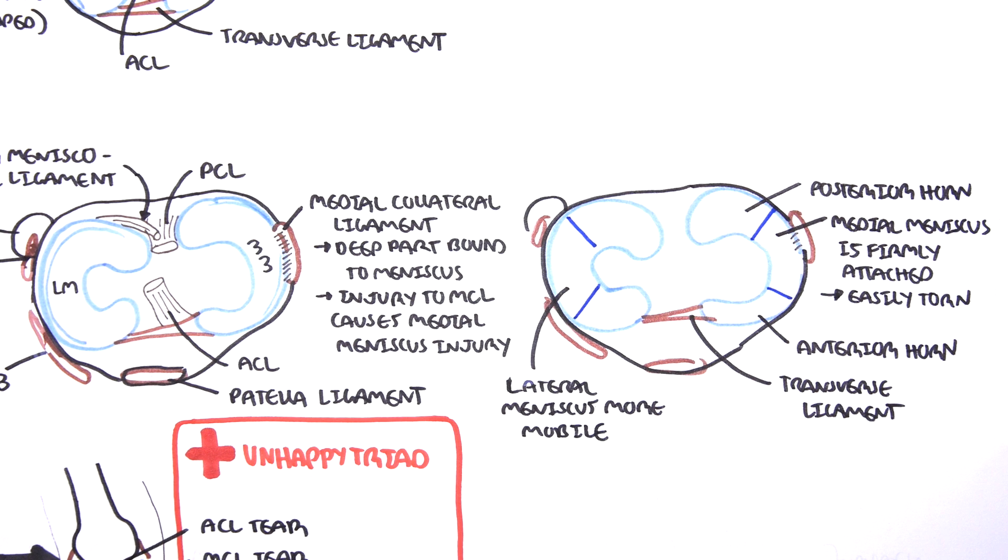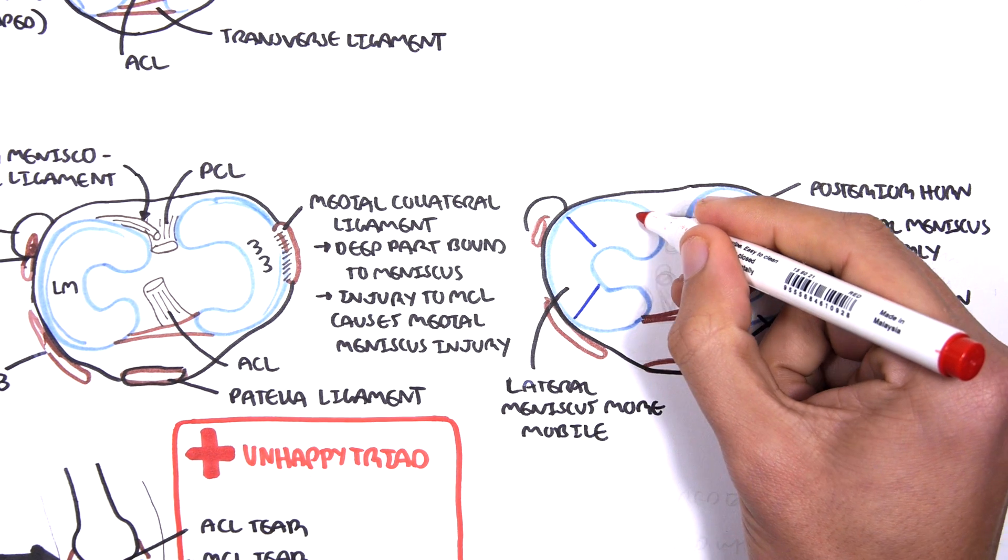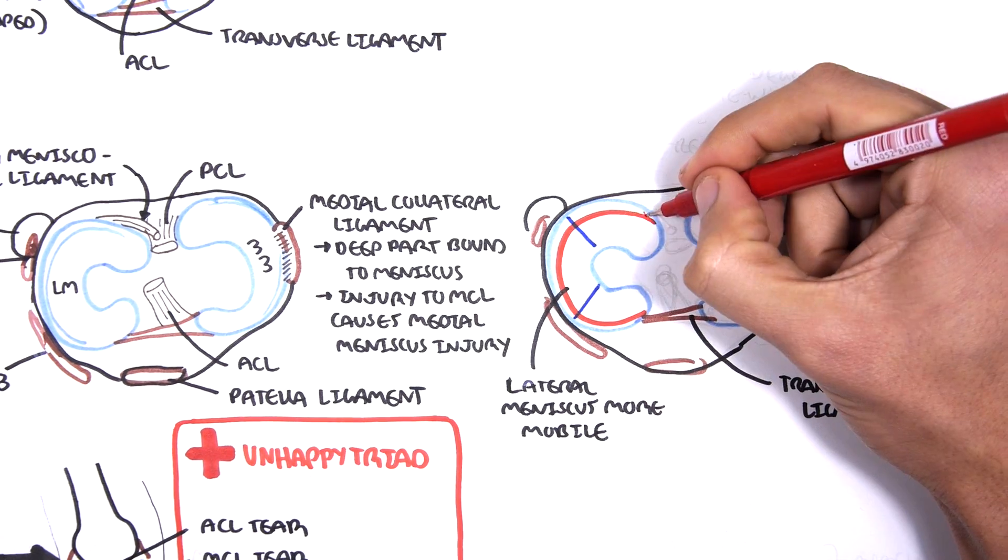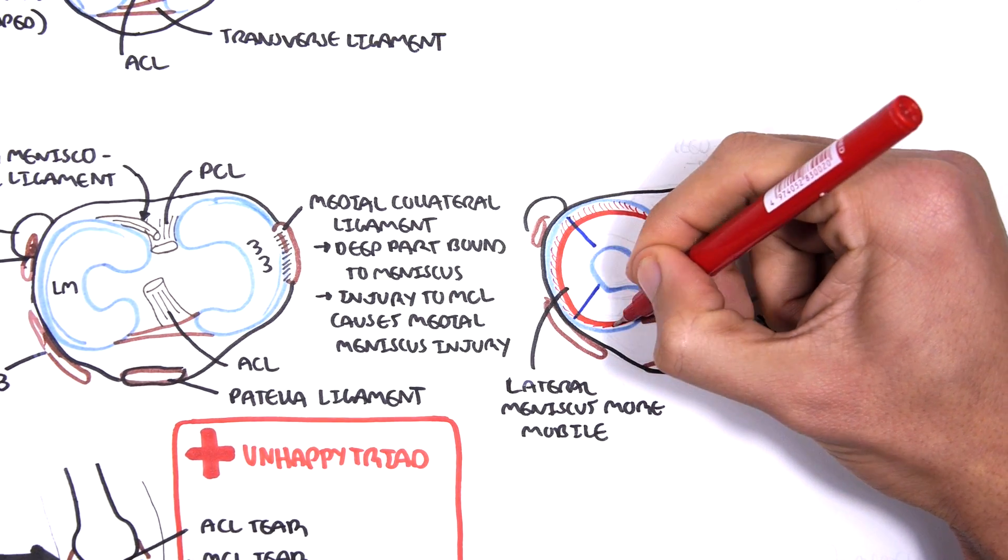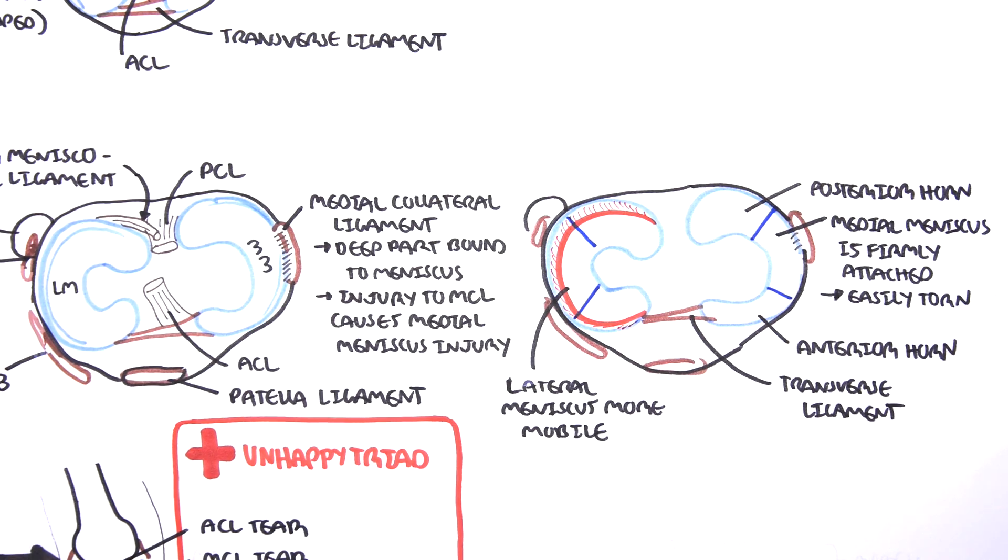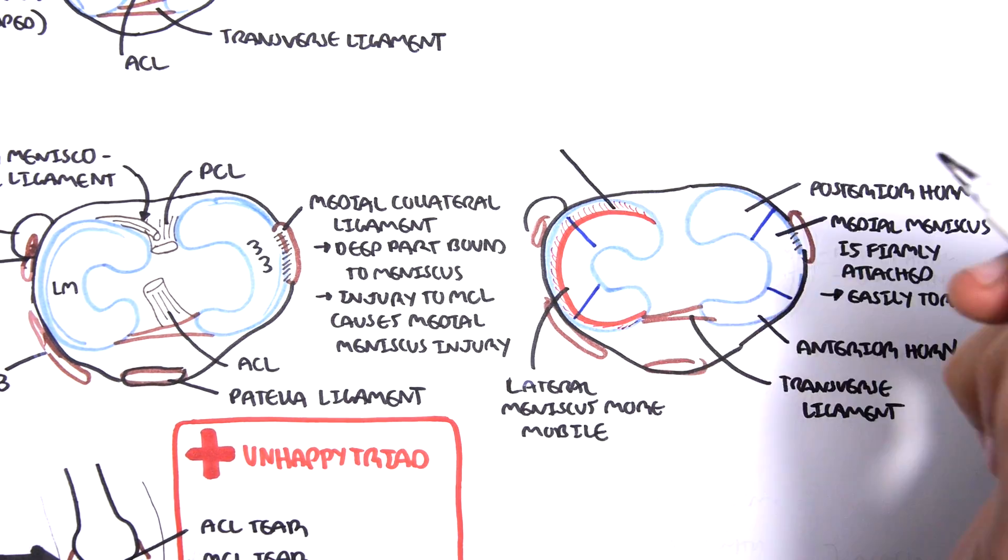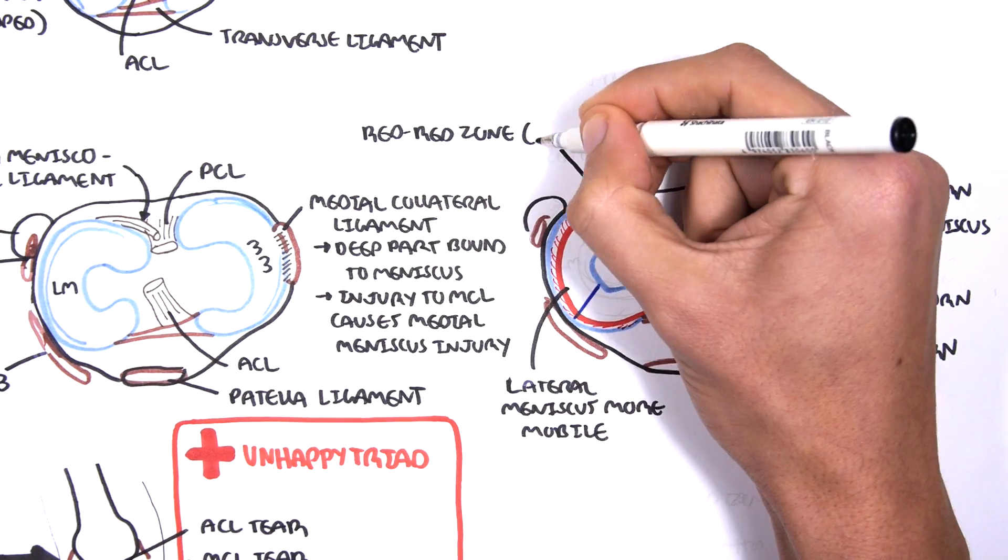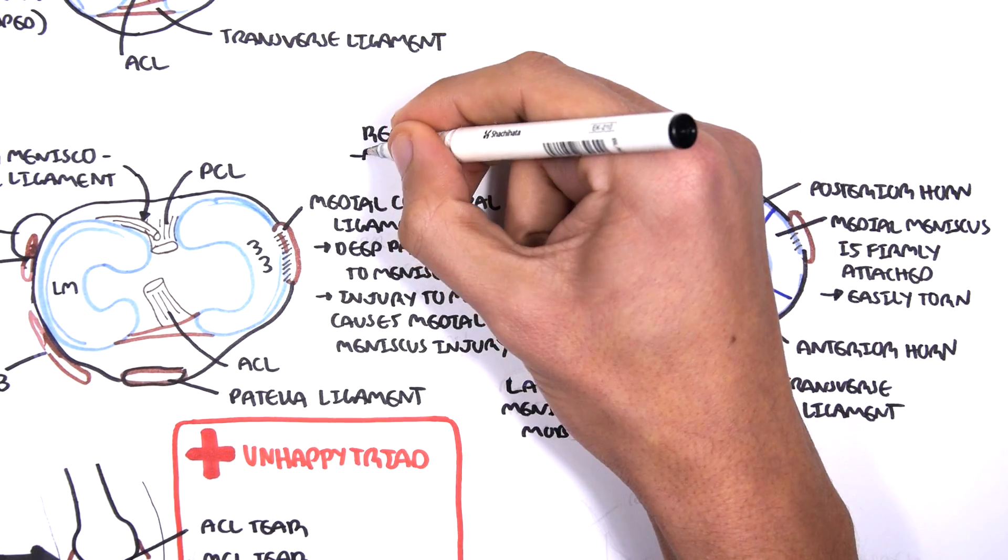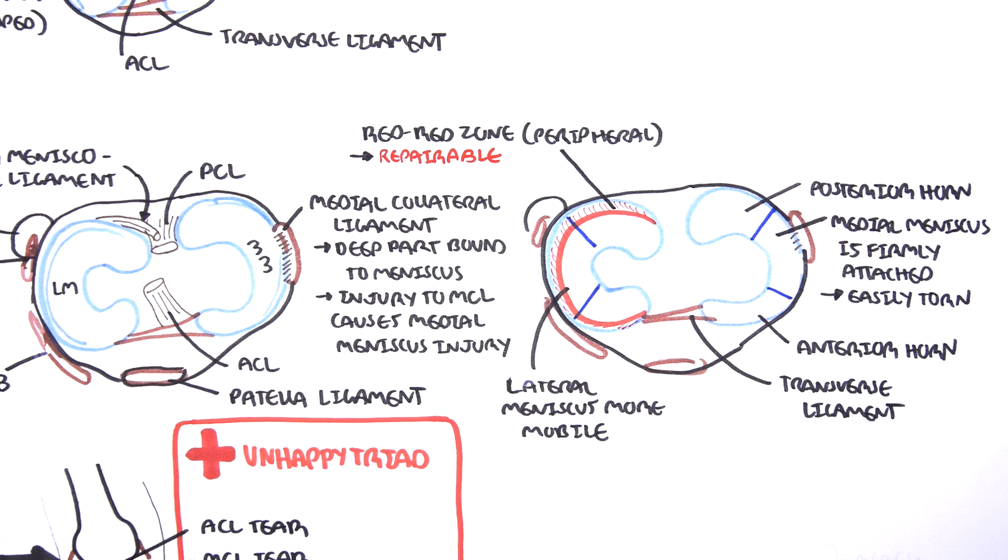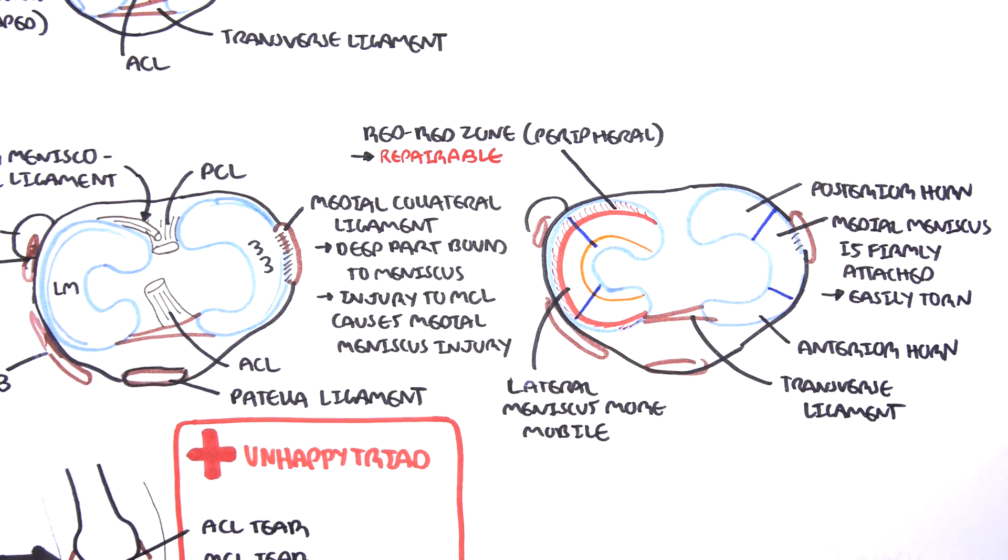Finally, we can further divide the lateral and medial meniscus into the peripheral third. So the outside edge is the peripheral third. Then we have the middle third and the inner third. The peripheral third is also known as the red-red zone. It is called the red-red zone because it has blood supply, branches of the geniculate arteries. Thus damage to the peripheral meniscus is repairable.